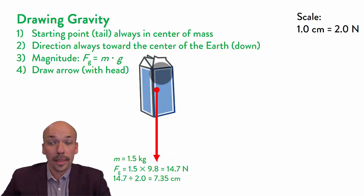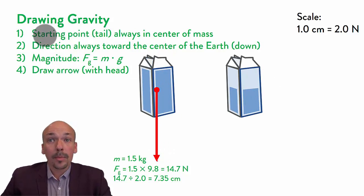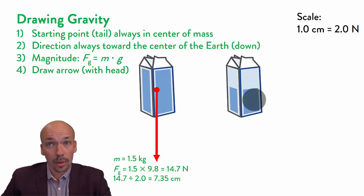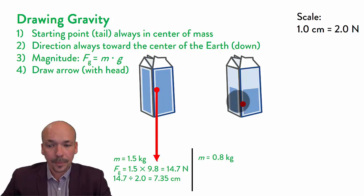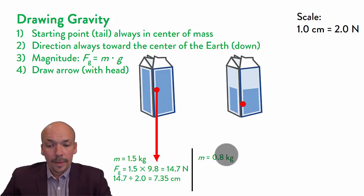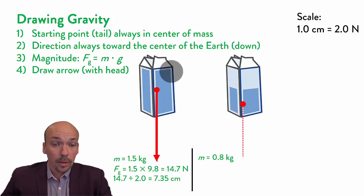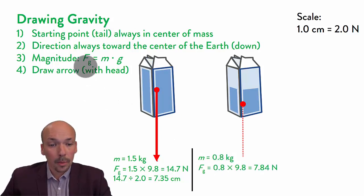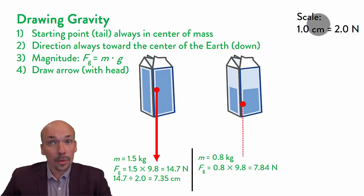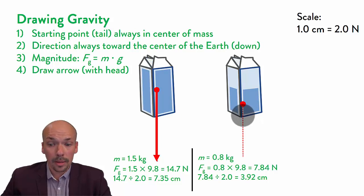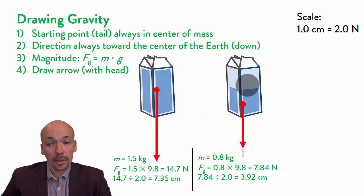In the next example, the carton box is already a little bit empty. We have to do all these steps again, but look out — the starting point, the center of mass, has changed. Because the mass went down, the center of mass also went down, so now it's around here. The mass is now 0.8 kilograms, and at the top there's air which is very light, so it won't count toward the center of mass. The direction is down again. The gravitational force is 0.8 times 9.8, which gives 7.84 newtons. Dividing by 2, the arrow needs to be 3.92 centimeters — shorter than before, because this packet is already a little emptier.